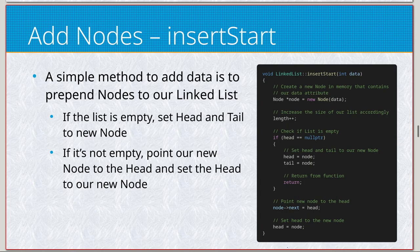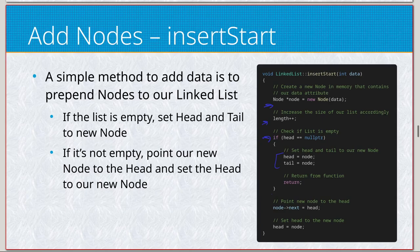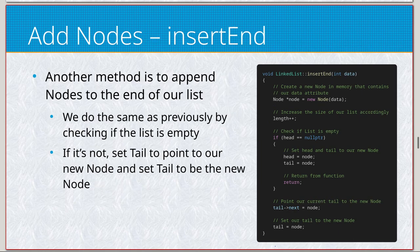Let's look at insert_start — one of the simplest methods, just inserting at the beginning and readjusting our head. We increase the length since we're inserting, then check if the list is empty. If the head is a null pointer, we set both head and tail to the new node and return. If it's not empty, we point the new node to the current head and then set head to the new node. Insert_end is very similar — same empty check, same length adjustment, but we adjust the tail instead.